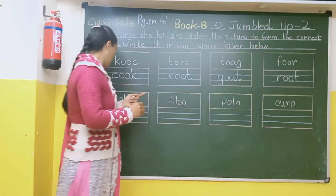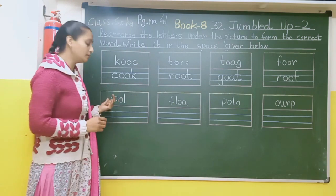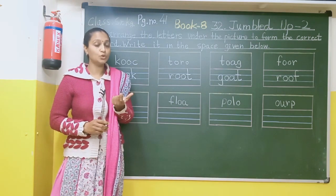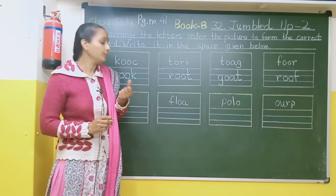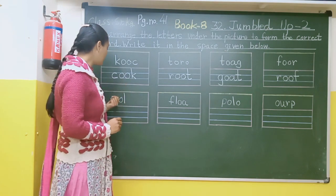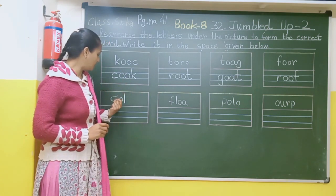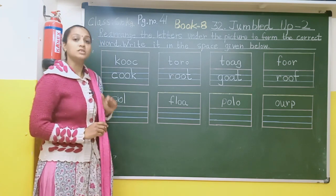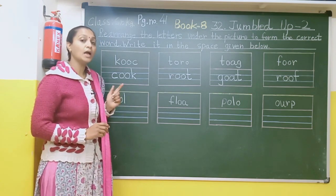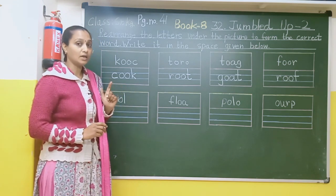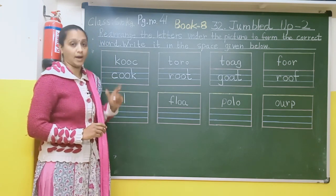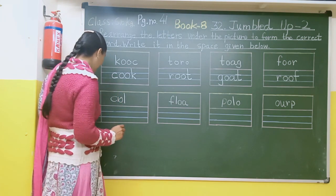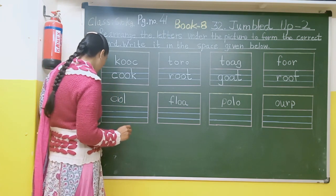Okay students, after that here there is an image of a coil, which is used to repel mosquitoes. The spelling here is C-I-O-L. Okay, when the correct spelling is C-O-I-L. Okay, so here there is a little mistake.